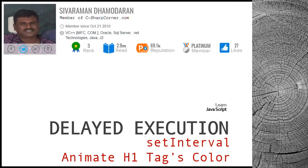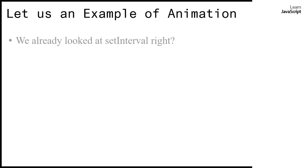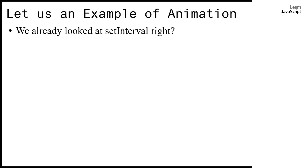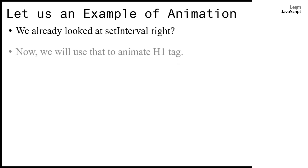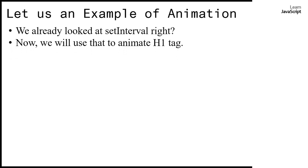Hello friends. In this video we are going to look at delayed execution and the setInterval function. Using setInterval we are going to animate an h1 tag with different colors. The setInterval function takes two parameters: the first is an expression or function call, and the second specifies the interval in milliseconds. When the milliseconds elapse, it calls the first parameter.